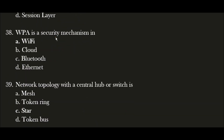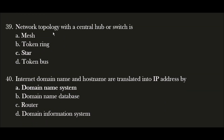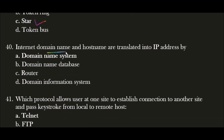Next question: WPA is a security mechanism in Wi-Fi — option A is correct. Next question: A network topology with a central hub or switch is called a star topology. Next question: Internet domain names and host names are translated into IP addresses via the Domain Name System (DNS) — the correct answer is option A.